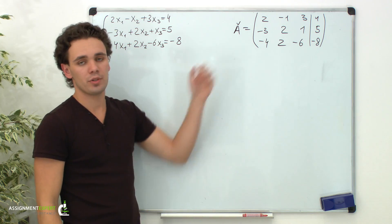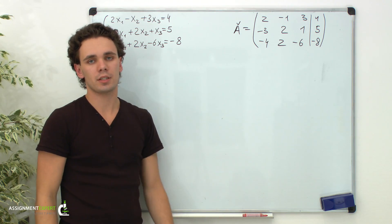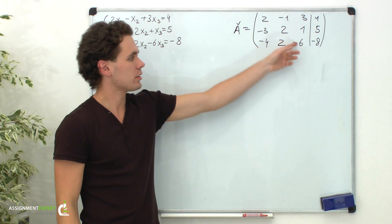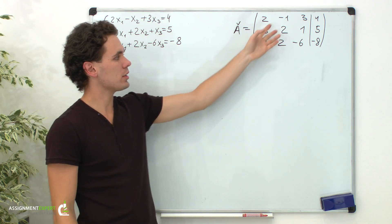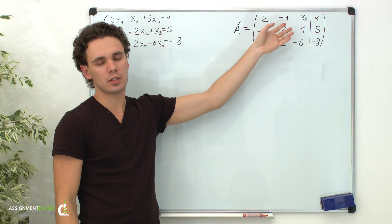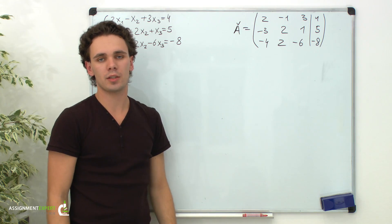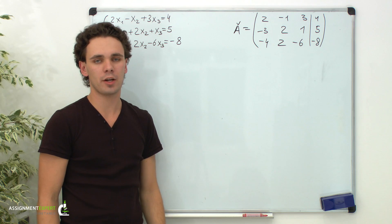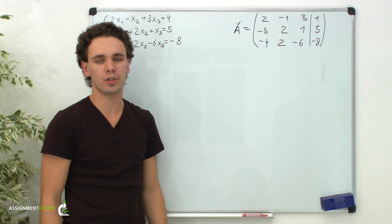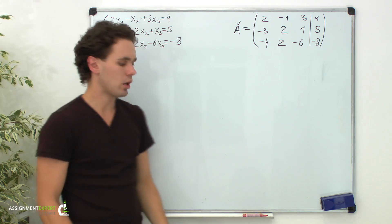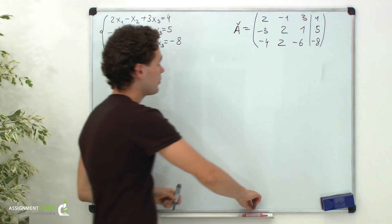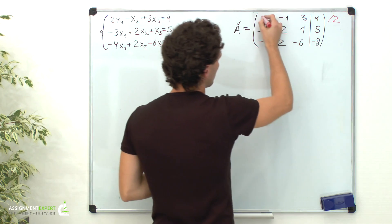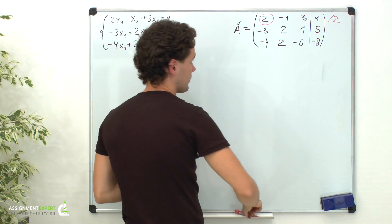We intend to represent this matrix in a triangular form, which means that we must get 1s on the main diagonal, 0s below it, and some values above it. We know that we can swap rows, add rows, subtract them, multiply or divide them by real non-zero numbers. Our first step is to divide the first row by 2 to obtain 1 on the main diagonal.